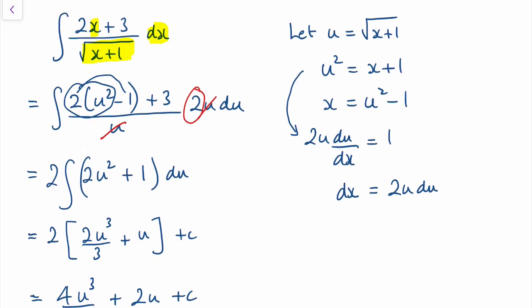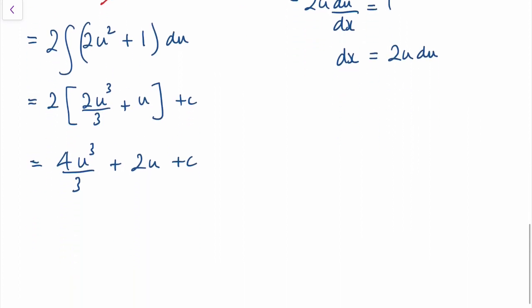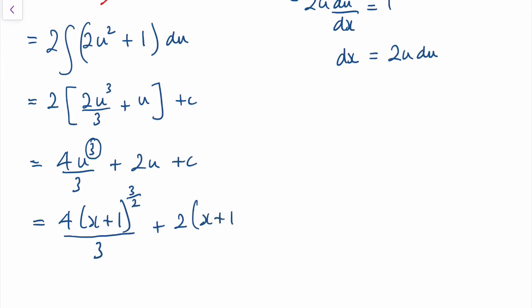The last step is to substitute back in for u. u is the square root of x plus 1, which I'll rewrite as x plus 1 to the power of one half. So the final answer is 4 times x plus 1 to the power of 3 over 2, all over 3, plus 2 times x plus 1 to the half, plus c.